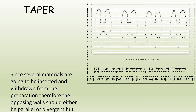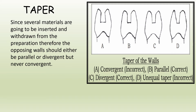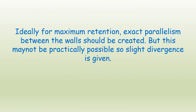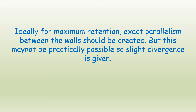Next is the concept of taper. The preparation for cast restoration cannot be prepared with undercuts or by inverted cone burs. Since several materials are going to be inserted and withdrawn from the preparation, the opposing walls should either be parallel or divergent, but never convergent. In the first diagram, the cavity walls are convergent — used for amalgam restorations but not for an inlay. Next are parallel cavity walls, which can be used for inlay. Then there are slightly divergent cavity walls, which can also be used. Unequal taper is also incorrect.